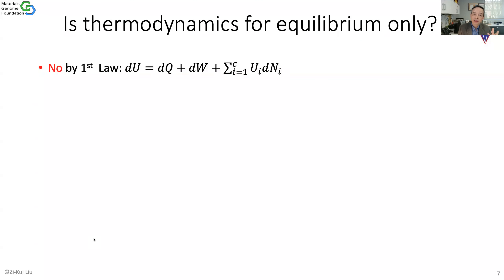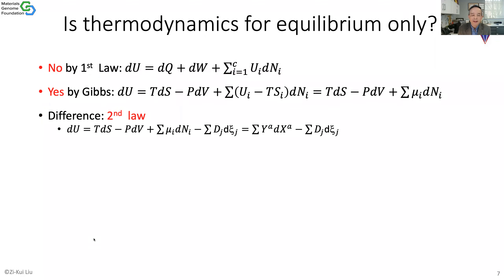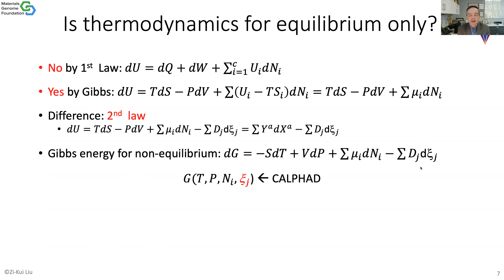The really central question I want to emphasize here is: is thermodynamics for equilibrium only? Actually it's not — the first law doesn't say that. However, the Gibbs combined law does say it's only for equilibrium. So if we put the second law back into the equation derived by Gibbs, we get an extra term, and then it becomes non-equilibrium. We can then derive the Gibbs energy for a non-equilibrium system with that extra term. That's the power of CALPHAD modeling — energy is not only a function of temperature, pressure, and composition, but also the internal degree of freedom.